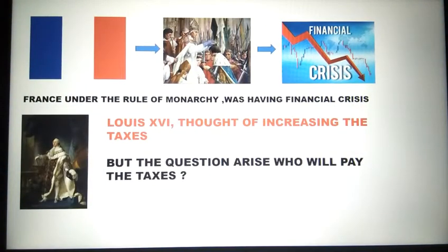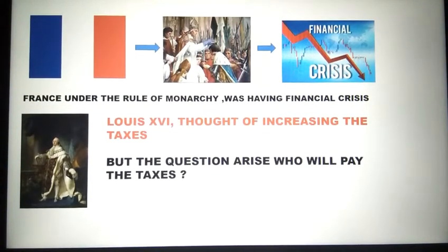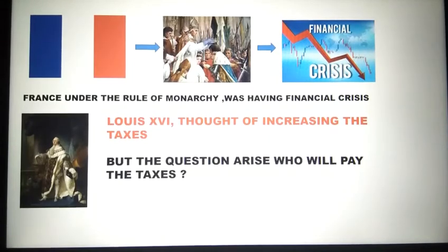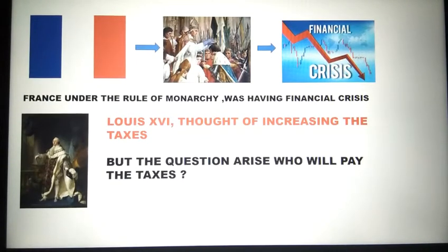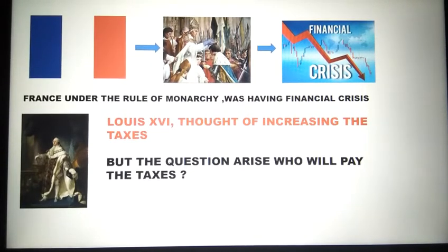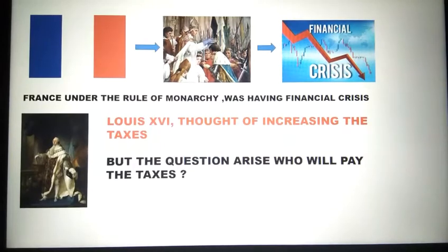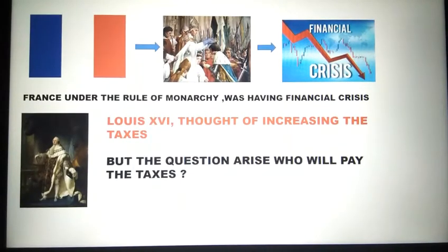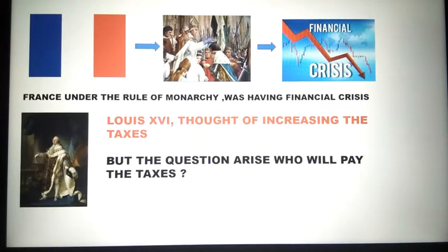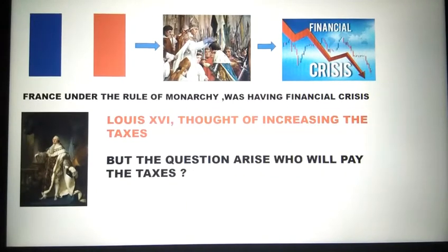Under the rule of the monarchy, King Louis XVI led France into a financial crisis — the money situation was very poor. Because the king was an extravagant and selfish king who spent on his own luxuries. Now the question arises: if there is a financial crisis, how will it be covered up? Louis XVI thought taxes should increase. And where will taxes come from? Who will pay the tax? The answer is the third estate.